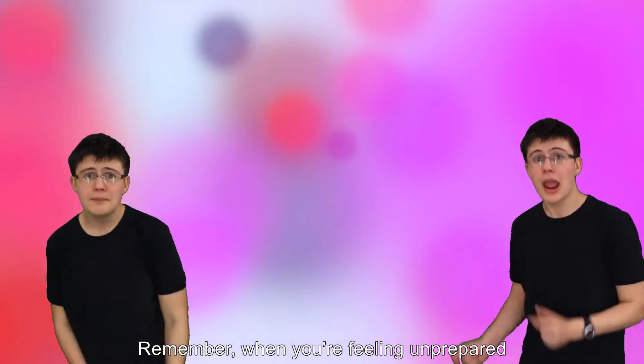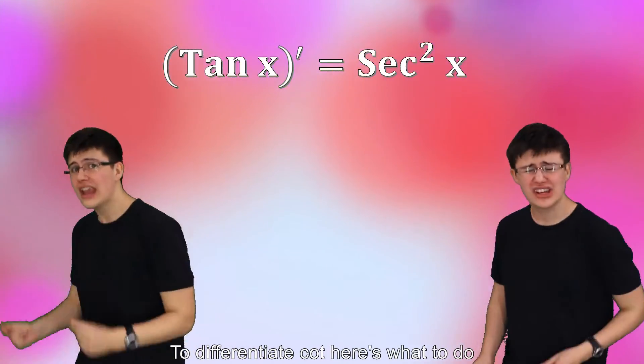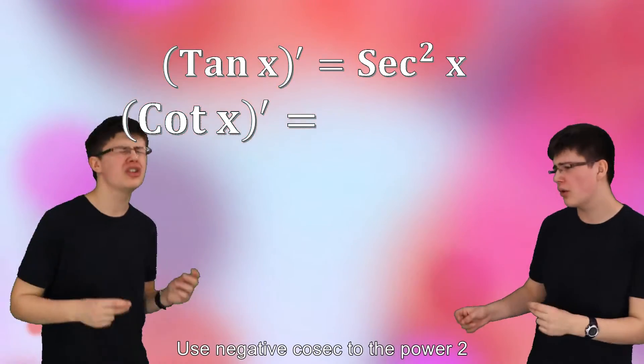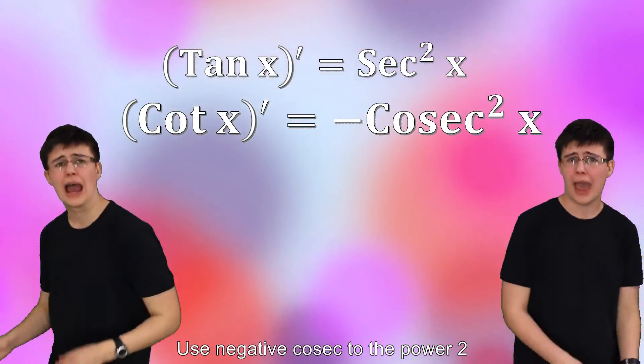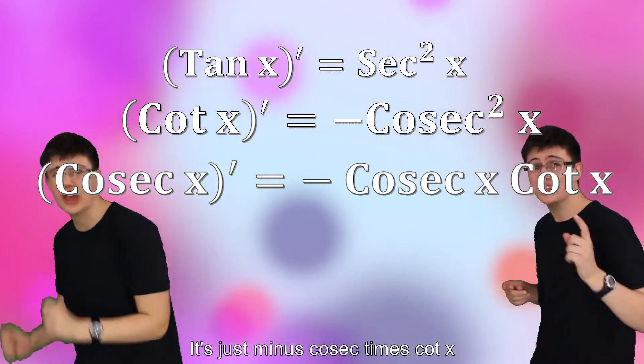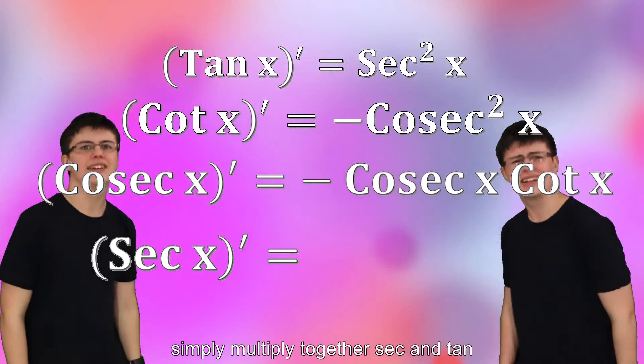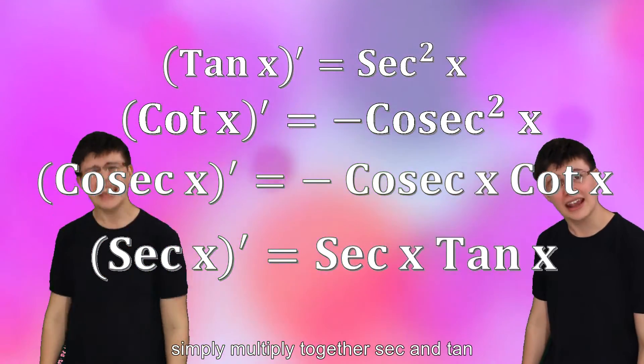Remember when you're feeling unprepared, you differentiate tan to get sec squared. To differentiate cot, here's what to do: use negative cosec to the power two. And if you've got cosec, don't be stressed. Just minus cosec times cot x. And what about the sec? Well yes, you can simply multiply together sec and tan.